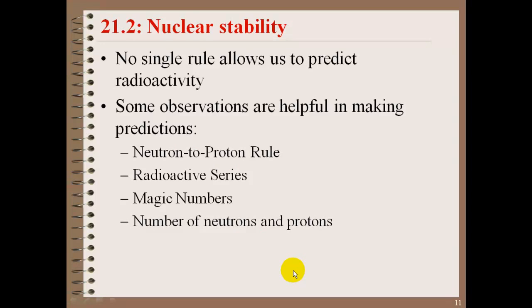Nuclear stability, there's no single rule that allows us to predict radioactivity. Some observations are helpful, though, in making some predictions. There is the neutron to proton rule, a radioactive series, magic numbers, or number of protons and neutrons.